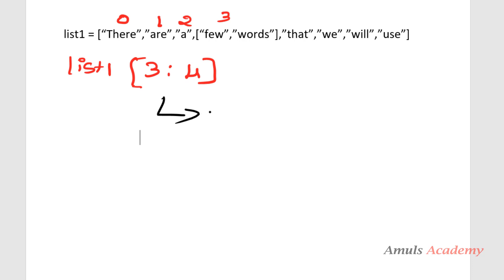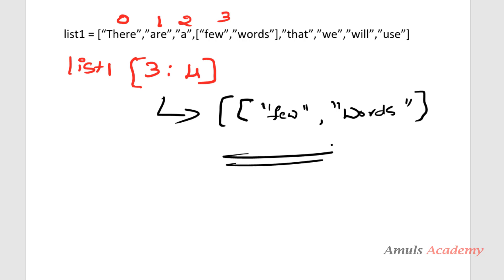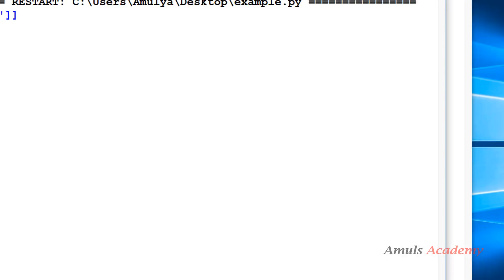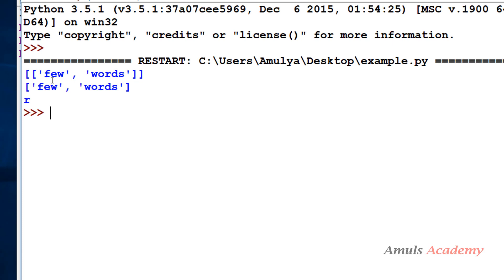The slicing operation returns a list, and the value present at index 3 is itself a list containing 'few' and 'words'. That's why in the first output we get a nested list — the slicing returns a list wrapping the inner list of 'few' and 'words'.